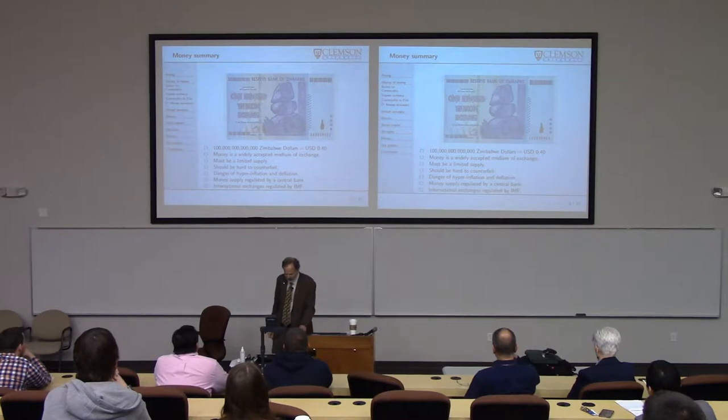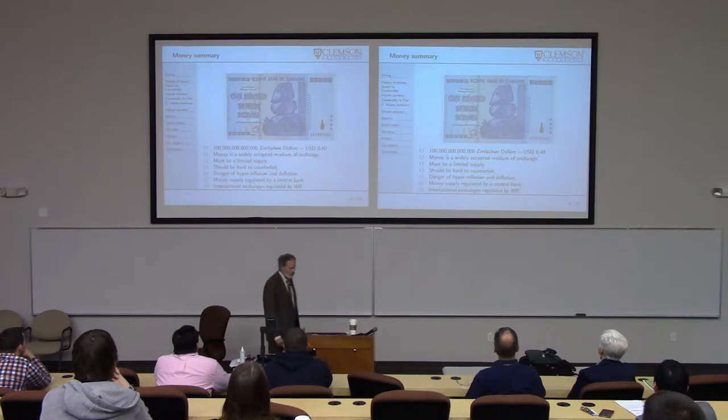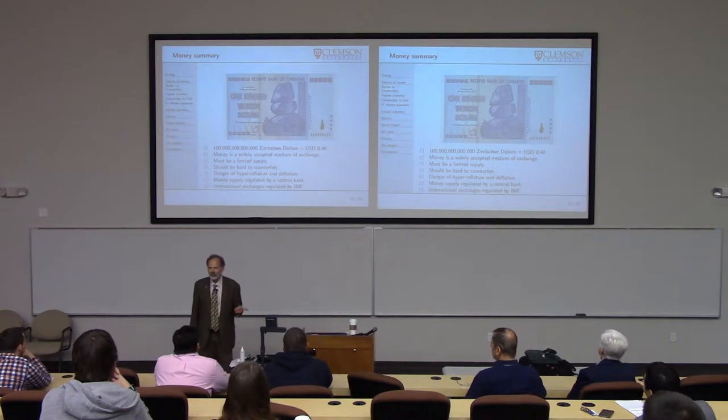Here's a summary example — that's 100 trillion Zimbabwe dollars. How many of you know about the Ig Nobel Prize? You should look at those; they have presentations each year online. If you win the Ig Nobel Prize, you get a $10 trillion prize in Zimbabwe dollars — that's about 4 cents. So money is basically a medium of exchange. It has to have a limited supply, and it should be hard to counterfeit.